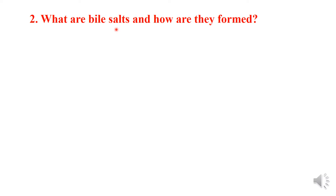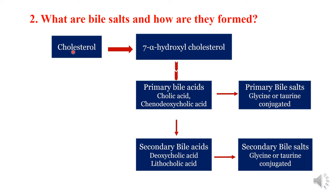Cholesterol first gives rise to 7-alpha-hydroxycholesterol, from which, after various reactions, primary bile acids — cholic acid and chenodeoxycholic acid — are formed. These primary bile acids conjugate with glycine or taurine to form primary bile salts. Similarly, the secondary bile acids, deoxycholic acid and lithocholic acid, also conjugate with glycine and taurine to form secondary bile salts.